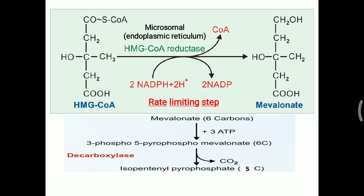Mevalonate reacts with three ATP molecules sequentially: one ATP produces phosphomevalonate, two ATPs produce pyrophosphomevalonate, and three ATPs produce 3-phospho-5-pyrophosphomevalonate, which contains six carbons. This six-carbon molecule is then converted into the five-carbon molecule isopentenyl pyrophosphate (IPP) via a decarboxylation reaction catalyzed by decarboxylase.